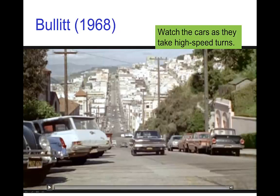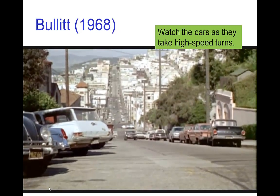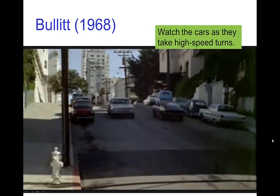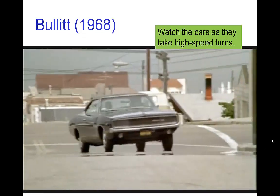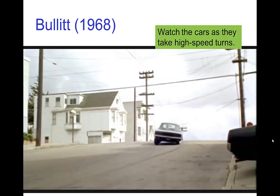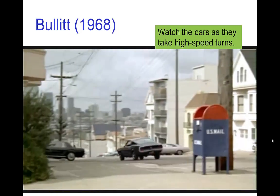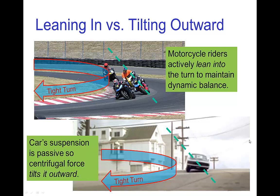Let's watch a quick scene from Bullitt and watch the cars as they make some high-speed turns. In that scene, because the car's suspension is passive, it tilts to the outside of the turn — you can think of it as being pulled by the centrifugal force. If there were motorcycles taking those turns, the motorcycle riders, in order to stay in balance, would naturally lean into the turn to maintain dynamic balance, as seen in this photo.